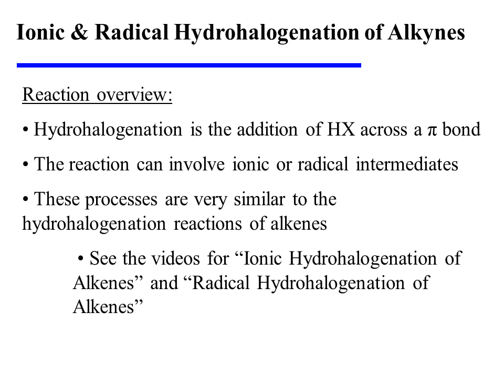The hydrohalogenation of alkynes involves the addition of HX across one or both pi bonds of the alkyne. The reaction can involve ionic or radical intermediates, and these processes are very similar to the hydrohalogenation reactions of alkenes. Therefore, you may find it useful to review the videos on ionic hydrohalogenation of alkenes and radical hydrohalogenation of alkenes.